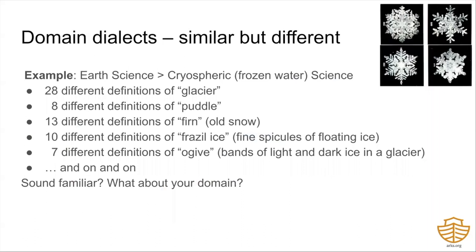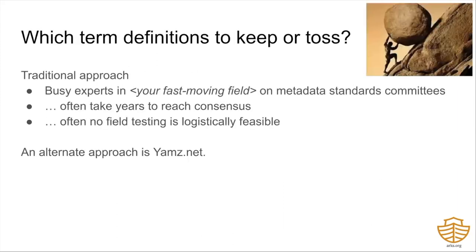It's not just cross-domain vocabularies that spawn dialects, but also narrow domain-specific vocabularies. In cryospheric science, which is all about frozen water, there's widespread disagreement on generalized terms such as glacier and puddle, and on specialized terms such as fragile ice. It happens in any domain where object experts care about accurate description in their area of specialization. With so many alternate terms, are all of them necessary? Who decides? Traditionally, busy experts in your fast-moving field sit on standards committees, which can take years to reach consensus, both for the initial draft and for revisions. Field testing is often very limited before standards are voted on and published. We think YAMS is an efficient and interesting alternative.